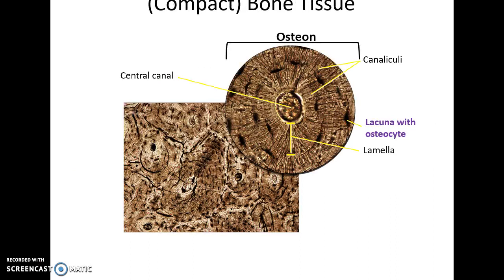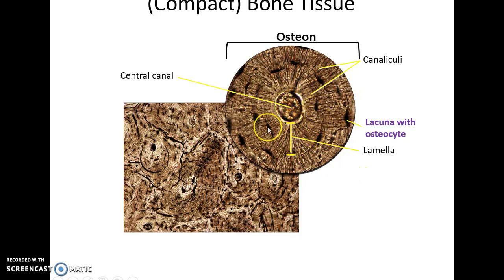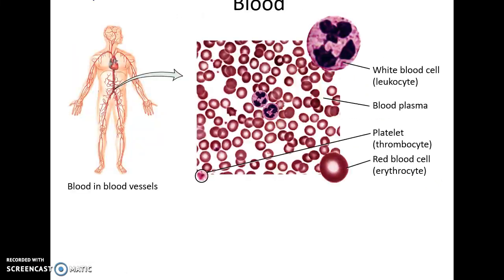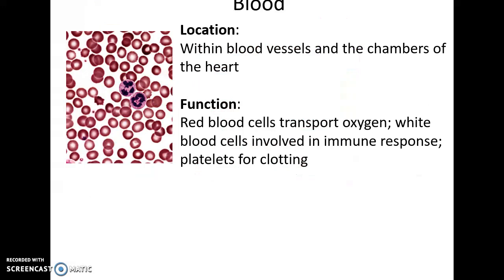Bone is also connective tissue. Compact bone has a repeating structure called the osteon with many layers called laminae. Within the layers are tiny channels called canaliculi that connect the lacunae, where osteocytes live, to the central canal where blood vessels and nerves are found. Bone provides support, protection, and mineral storage. Blood is the liquid connective tissue, containing blood cells and immune cells found within blood vessels.